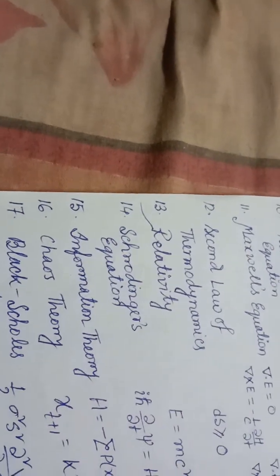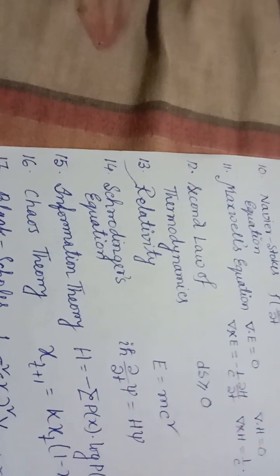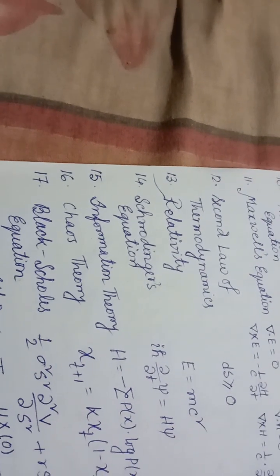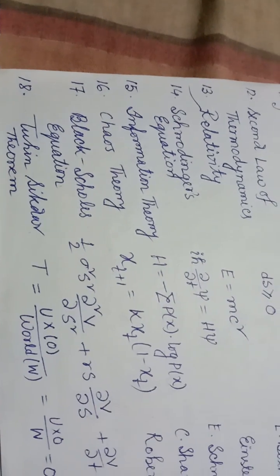Formula number 14, Schrödinger's equation: iℏ∂ψ/∂t = Hψ. E. Schrödinger, 1927. Formula number 15, information theory: H = -Σp(x)log p(x). C.E. Shannon, 1949. Formula number 16, chaos theory: X(t+1) = KX(t)(1 - X(t)). Robert May, 1975.